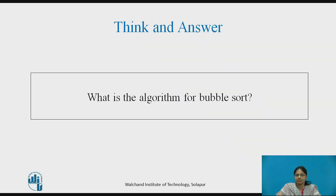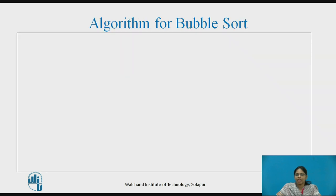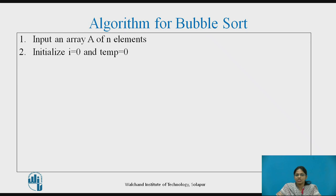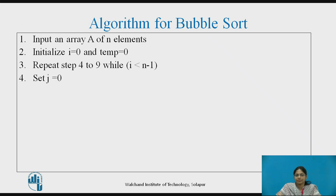Try to think about the algorithm for bubble sort. Pause the video and note down the answer. Algorithm for bubble sort: Input an array A of N elements. Initialize i equal to 0 and temp equal to 0. Repeat steps 4 to 9 while i is less than N minus 1. Inside the while loop, set j equal to 0 each time. Repeat steps 6 to 8 while j is less than N minus i minus 1.